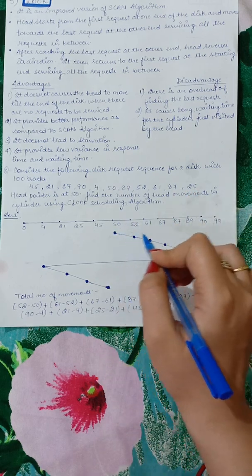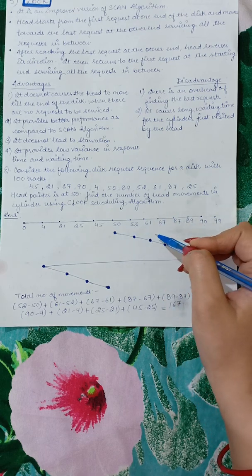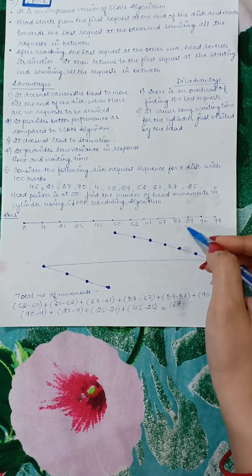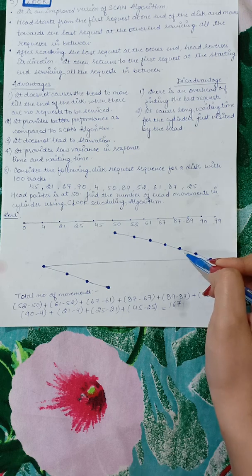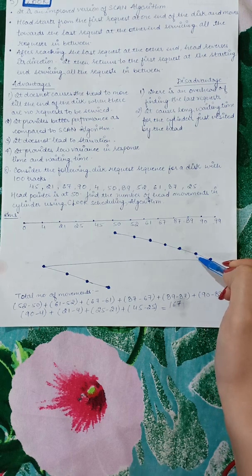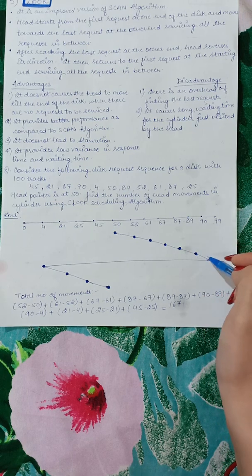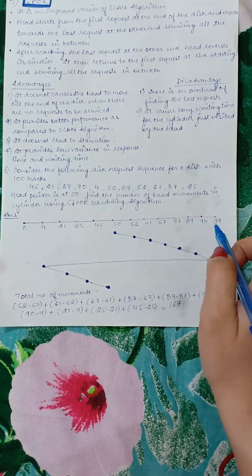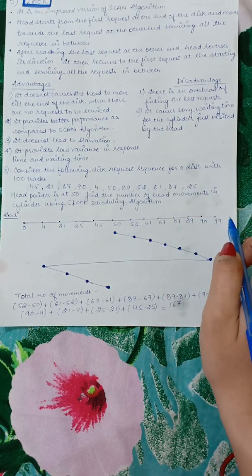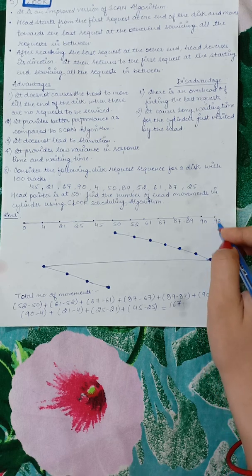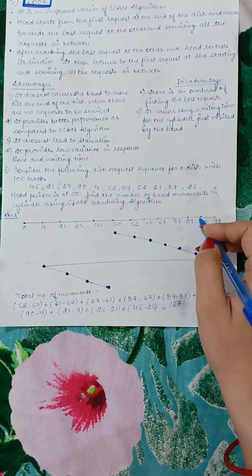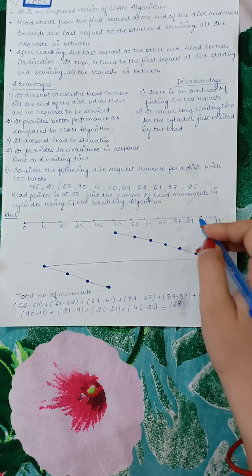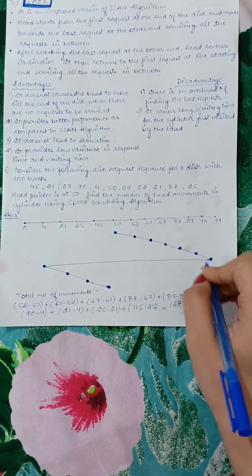So 50 to 52, then 61, then 67, then 87, then 89, then 94. But it will not go to 99 - there will be a reverse movement at 94 since that's the last request in this direction.